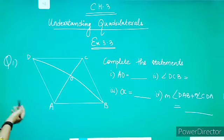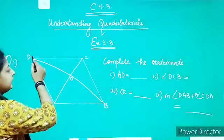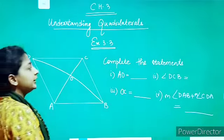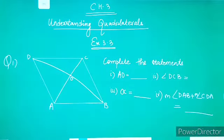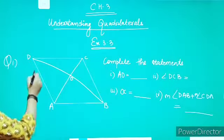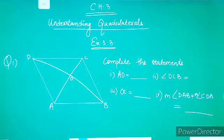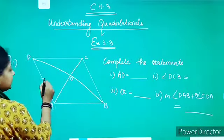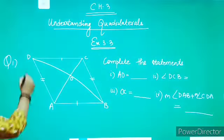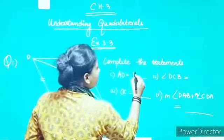Question number 1: a parallelogram ABCD has been given to us. AC and BD are the diagonals and these diagonals intersect at point O. We have to complete these statements. First, AD equals to — AD is this side. We know in a parallelogram the opposite sides are parallel and equal. So AD is equals to BC.